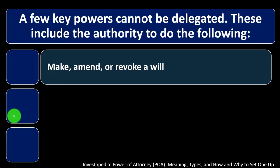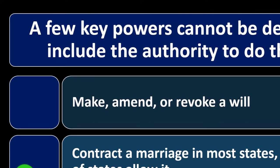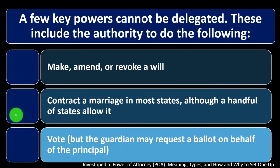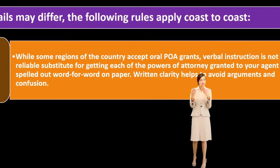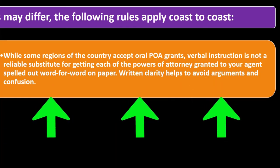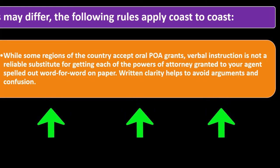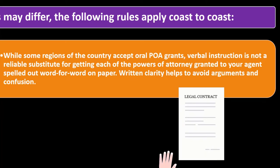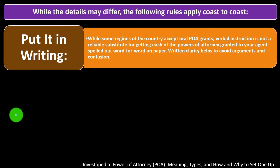All states accept some version of the durable power of attorney. A few key powers cannot be delegated: making, amending, or revoking a will; contracting a marriage in most cases; and voting. Generally, the POA should be put in writing. While some regions accept oral POA grants, verbal instruction is not a reliable substitute — written clarity helps to avoid arguments and confusion.